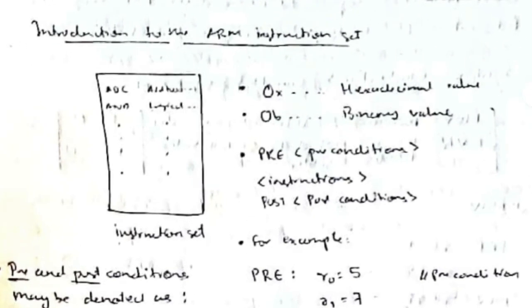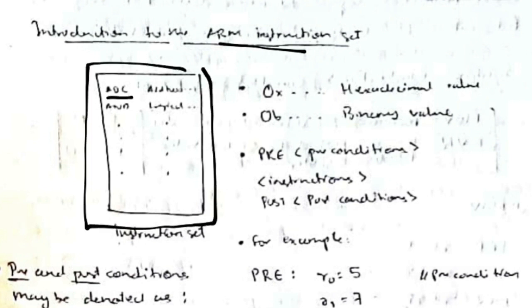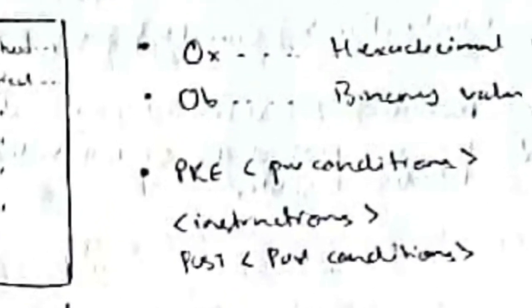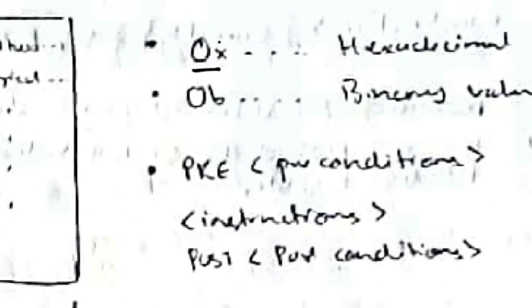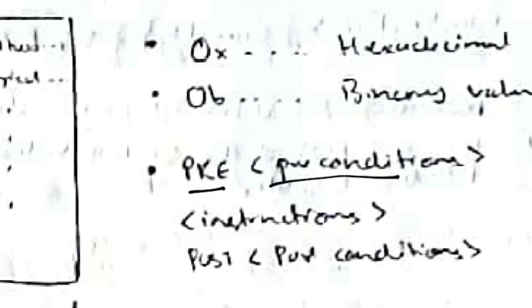The first topic is the ARM Instruction Set, which is a document where each word has a defined meaning — for example, 'ADD' means add two register values. We'll mostly be using binary and hexadecimal values. In hexadecimal, you'll see '0x' as a prefix, and in binary you'll see '0b' — whatever number follows those prefixes is in that respective format.